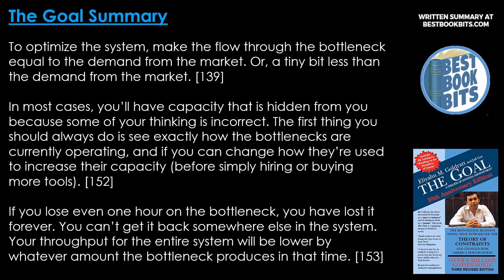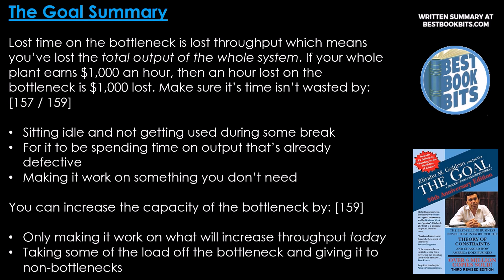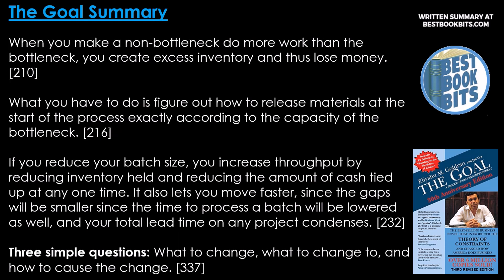The first thing you should always do is see exactly how the bottlenecks are currently operating and if you can change how they're used to increase their capacity before simply hiring or buying more tools. If you lose even one hour on the bottleneck, you have lost it forever — you can't get it back somewhere else in the system. Lost time on the bottleneck is lost throughput, which means you've lost the total output of the whole system. If your whole plant earns $1,000 an hour, then an hour lost on the bottleneck is $1,000 lost. Make sure its time isn't wasted sitting idle, spending time on defective output, or working on something you don't need. You can increase bottleneck capacity by only making it work on what increases throughput today, and taking some load off the bottleneck and giving it to non-bottlenecks. When you make a non-bottleneck do more work than the bottleneck, you create excess inventory and thus lose money.